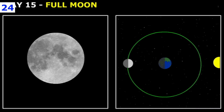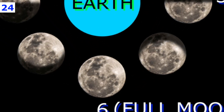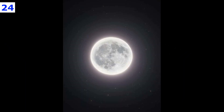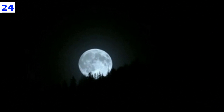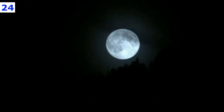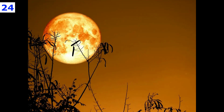Halfway through the lunar cycle, a full moon occurs. The moon is at its furthest point from the sun in its orbit, and the side of the moon facing us appears as a perfectly round disk. Whereas a new moon rises and sets in tandem with the sun, the opposite is true for a full moon, which lights the night from around sunset to sunrise.